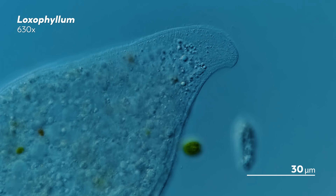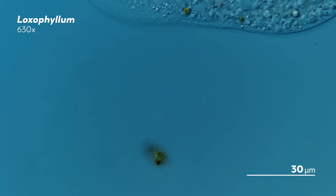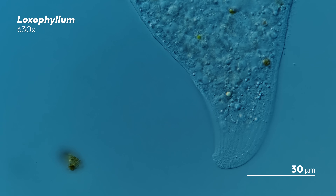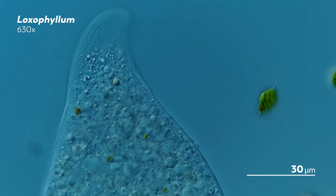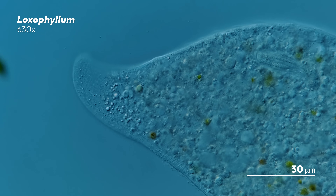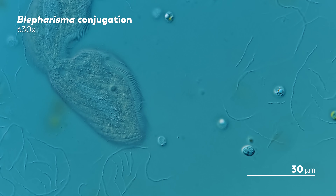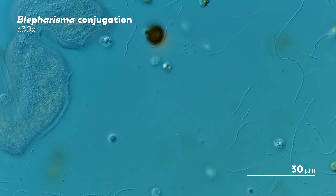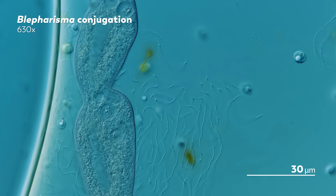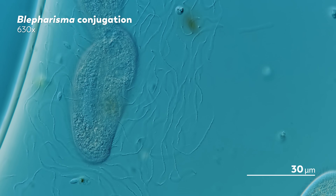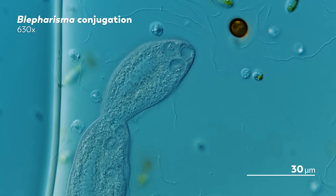Just looking at ciliates, it's hard to find much of a resemblance to us. To start, they're made up of just one cell, able to carry out all their needs with the organelles packed into the confines of one membrane. We, on the other hand, start out as a single cell, but that single cell must divide over and over so that the trillions and trillions of cells it eventually forms can cohere into different structures that become a body.